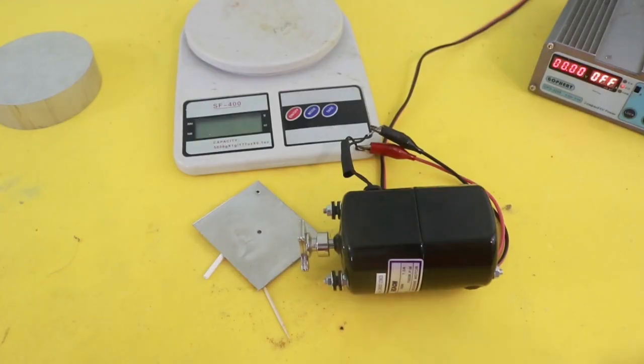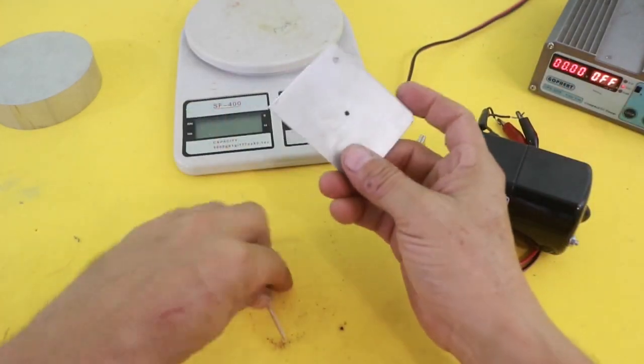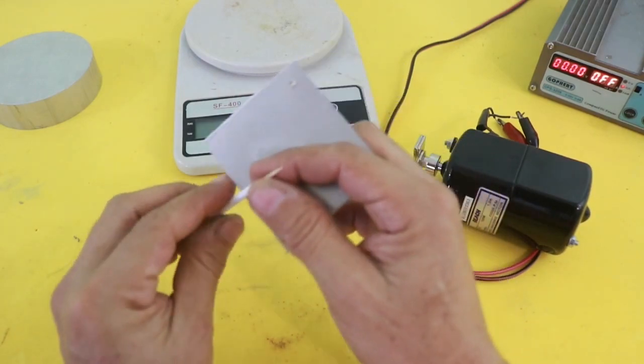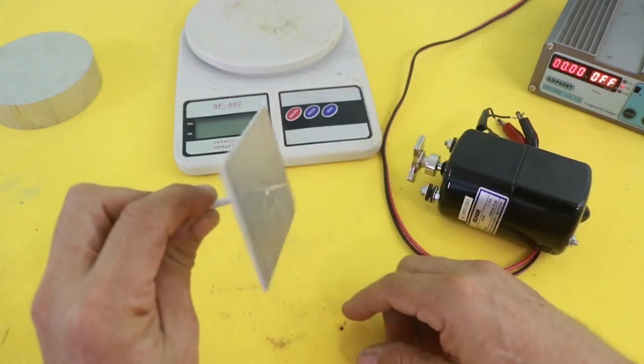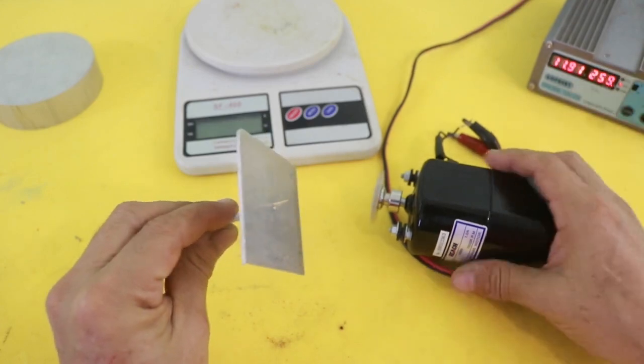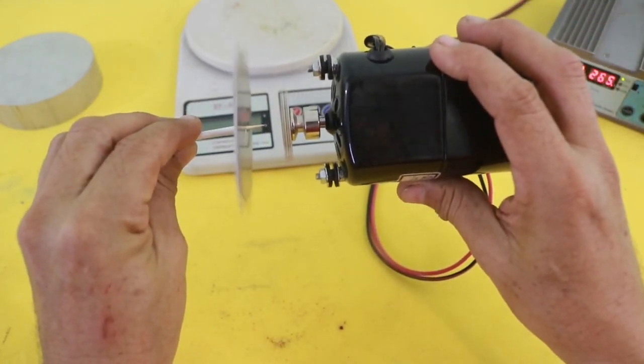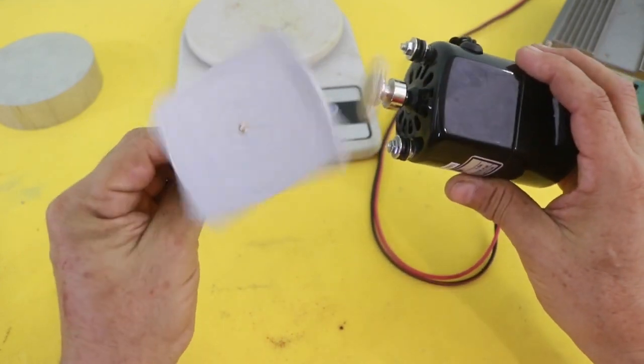Finally, let me show you another effect of Lenz's law. I am going to take this aluminum plate and put it on this piece of wood so that it can rotate freely. Then start the motor, and without touching, the aluminum plate starts to rotate.